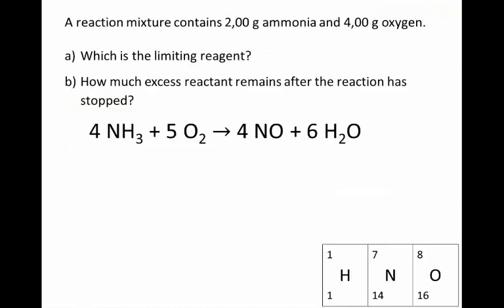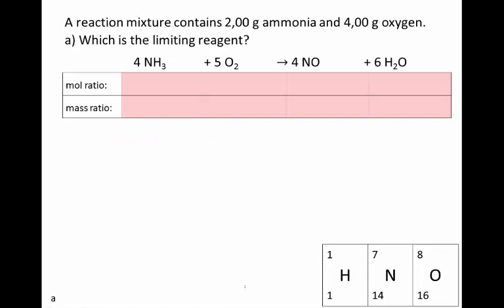The first step is to write a balanced equation. Here it is. Then we need to give the reaction ratios of this balanced equation. We give it as a mole ratio, which is simply the coefficients: 4 moles of ammonia reacts with every 5 moles of oxygen to produce 4 moles of nitrogen oxide and 6 moles of water.